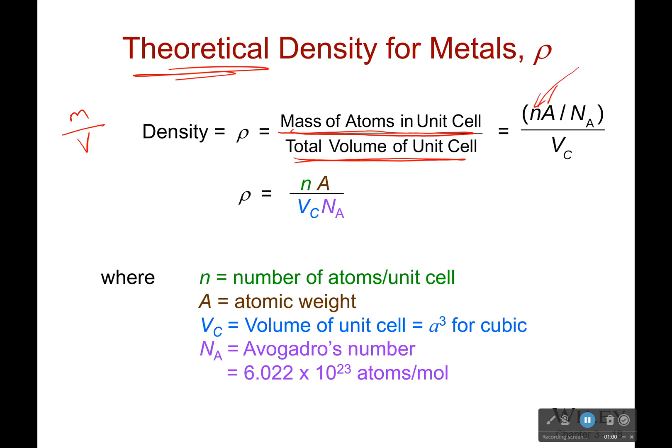This right here, n, we already know that based on the structure, how many atoms are per unit cell. Atomic weight we can look up in our periodic table. Now this number is a constant. So the only thing we really need to get from experiment is what is the volume of this unit cell. And even with that, a lot of times the radii of different metals and atoms are known. So you can use that to solve these problems for you.